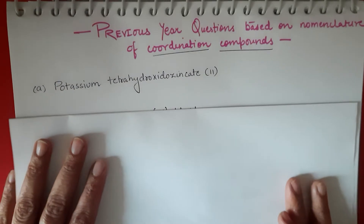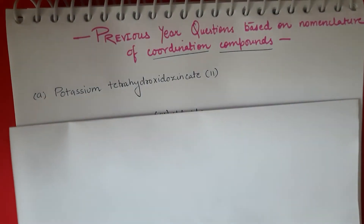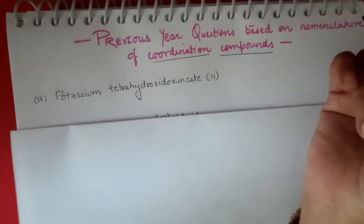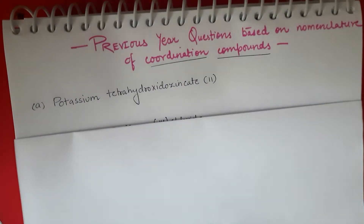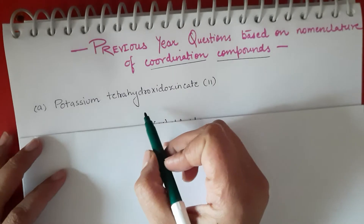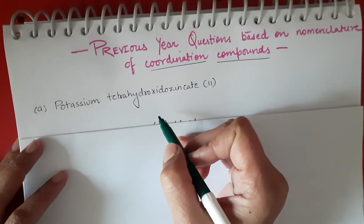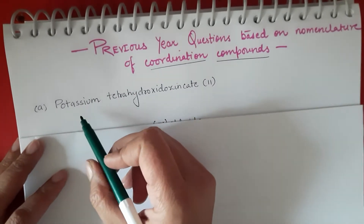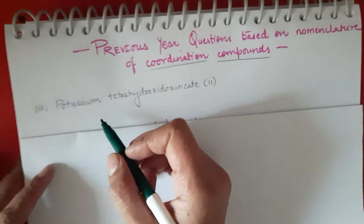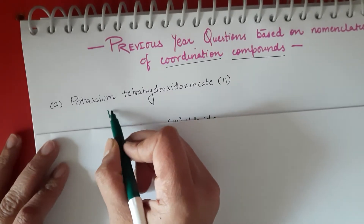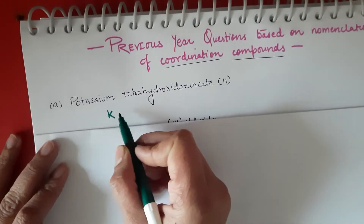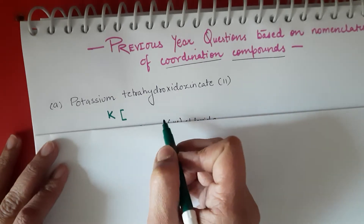Here it's given: potassium tetrahydroxyzincate(II). So you have to first recall the nomenclature rules which I had already discussed in my previous section. Just recall the rules of nomenclature. The very first rule is we have to identify the cation part. Here, potassium is an electropositive element so it's the cation portion. We have to write first of all the formula of potassium — so let's start with K.